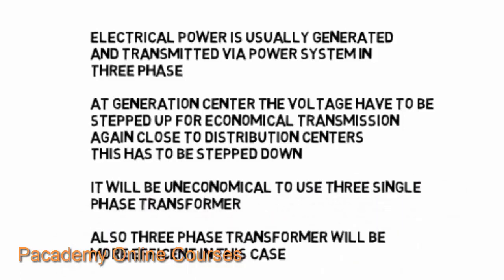At the generation center, the voltage has to be stepped up for economical transmission. At higher voltage, the current on the transmission line will be less and the I²R, or copper losses, will be less. So transmission usually occurs at higher voltage, and close to the distribution center, it has to be stepped down so that it can be used by low-voltage equipment.